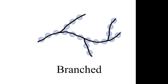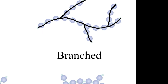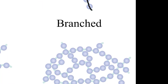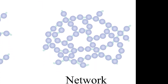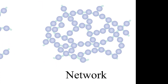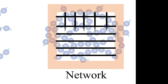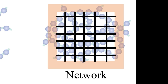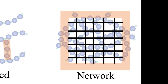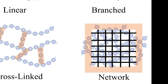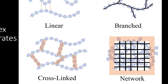Starch molecules such as amylose, found in potatoes, are branched polysaccharides that store massive amounts of energy. Most complex network shapes can form mesh-like structures that hold extracellular components in place and allow cells to form tissues. These are just some of the many ways that carbohydrates are used within cells.